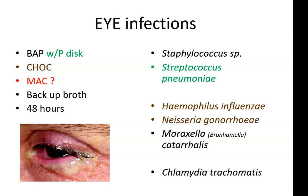Neisseria gonorrhoeae can get in the eye — typically accidental exposure, but it happens. Chlamydia trachomatis can cause a lot of eye infections and causes blindness in many communities in other countries of the world. For eye infections, since we're looking for gram positives and gram negatives, we want media that will grow both. MacConkey is typically for enteric gram-negative organisms, so that is not usually something we use.